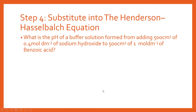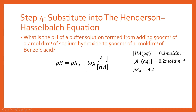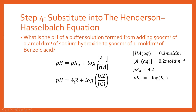We're now close to finding the answer. We substitute into the Henderson-Hasselbalch equation using the values we've worked out. The pKa of benzoic acid is 4.2 — you can also calculate this from Ka by taking the negative log base 10 of Ka. Substituting the pKa and the concentrations into the equation and evaluating gives us the final pH. That is how you calculate pH using the Henderson-Hasselbalch equation.